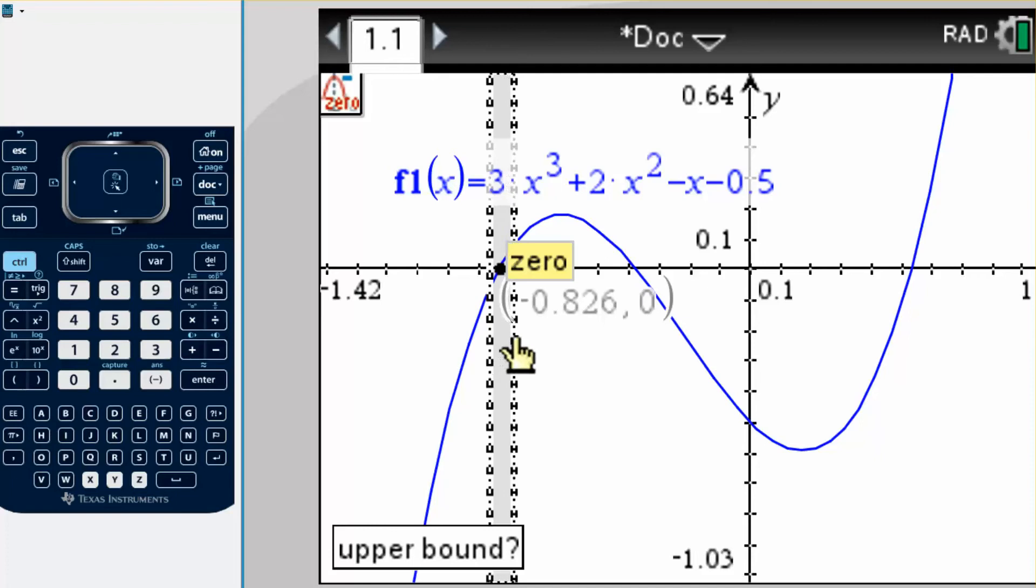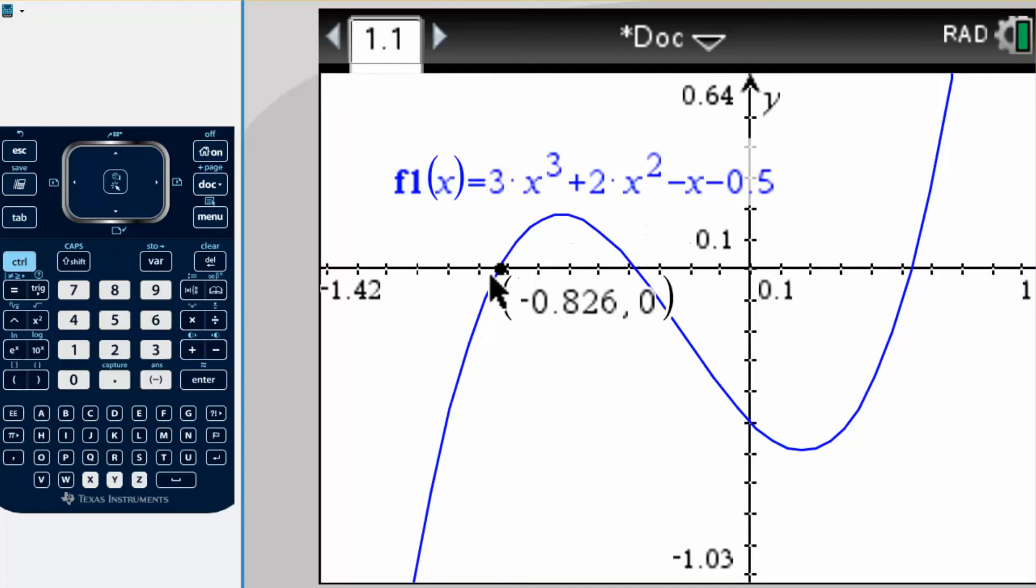To the right of it, and then it wants that x intercept or that zero point, and it tells you that when y is equal to zero, x is equal to negative 0.826. So you could do that for the other ones too.